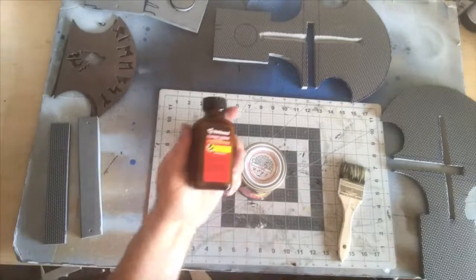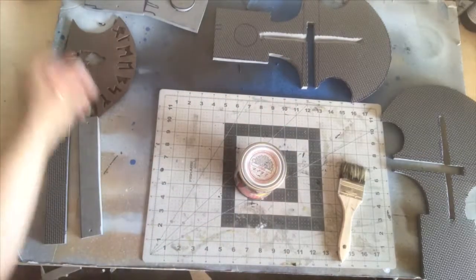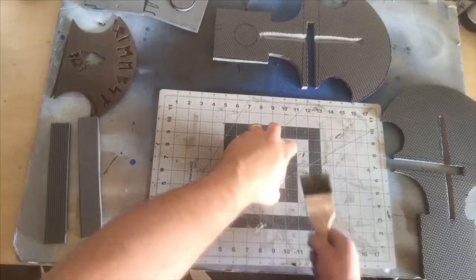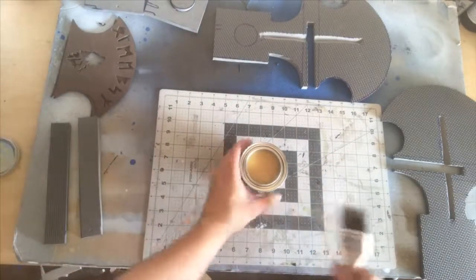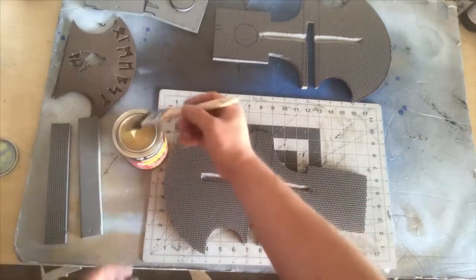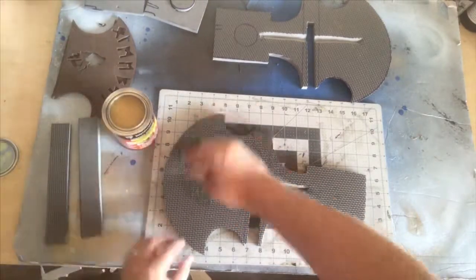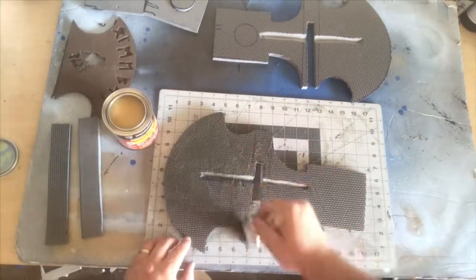So how to glue it. I like this stuff, this Weldwood contact cement. That's what I like to use. So I bought it in this like pint size container. So I just grab a thick brush, like a throwaway brush, basically, and just glue that stuff on there and get it all over.